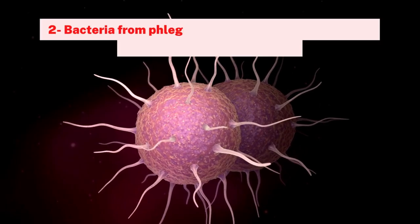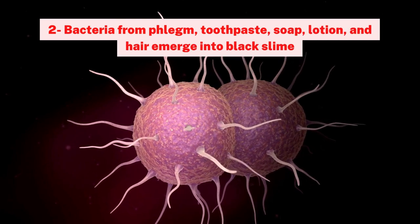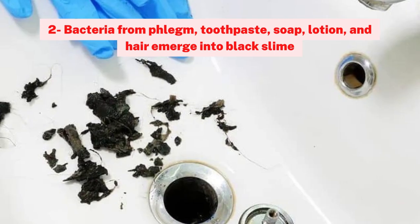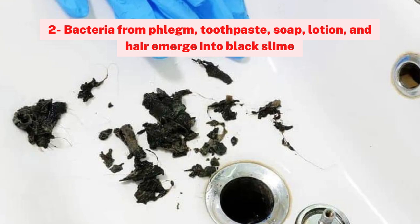Reason 2. Bacteria from phlegm, toothpaste, soap, lotion, and hair emerge into black slime. Black slimes form a massive chain and settle in the clogged pipe. As a result, water becomes slow.